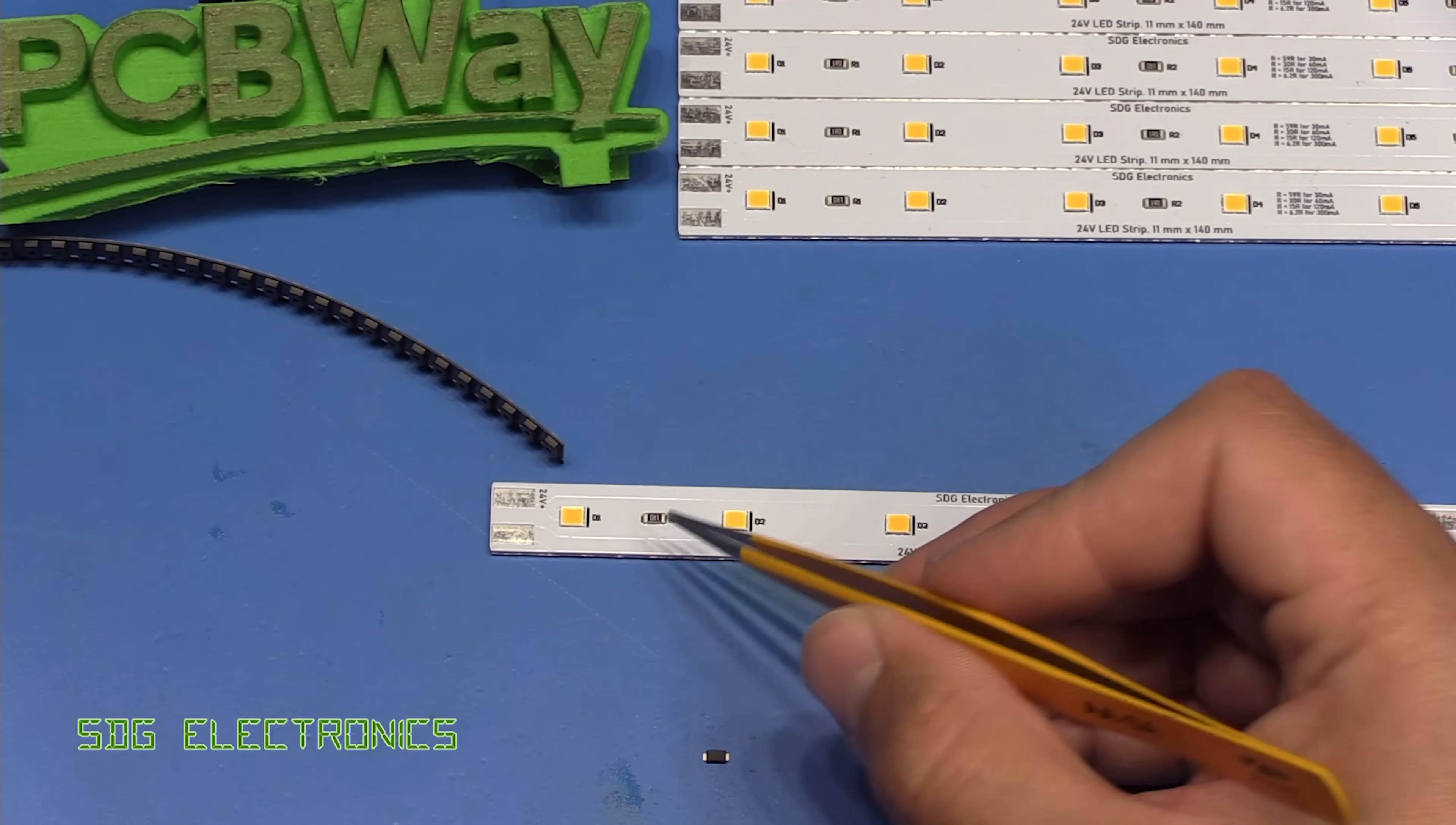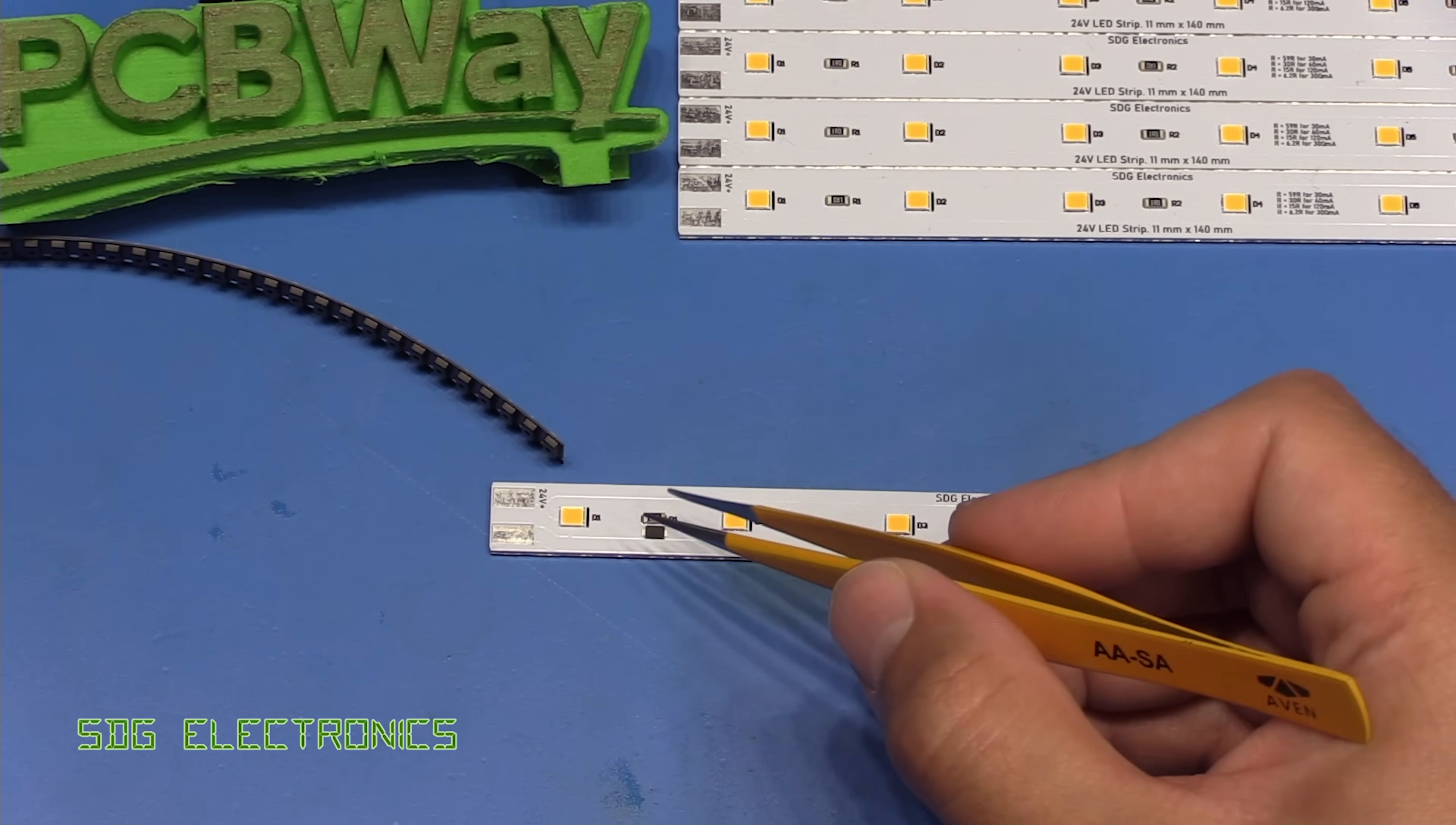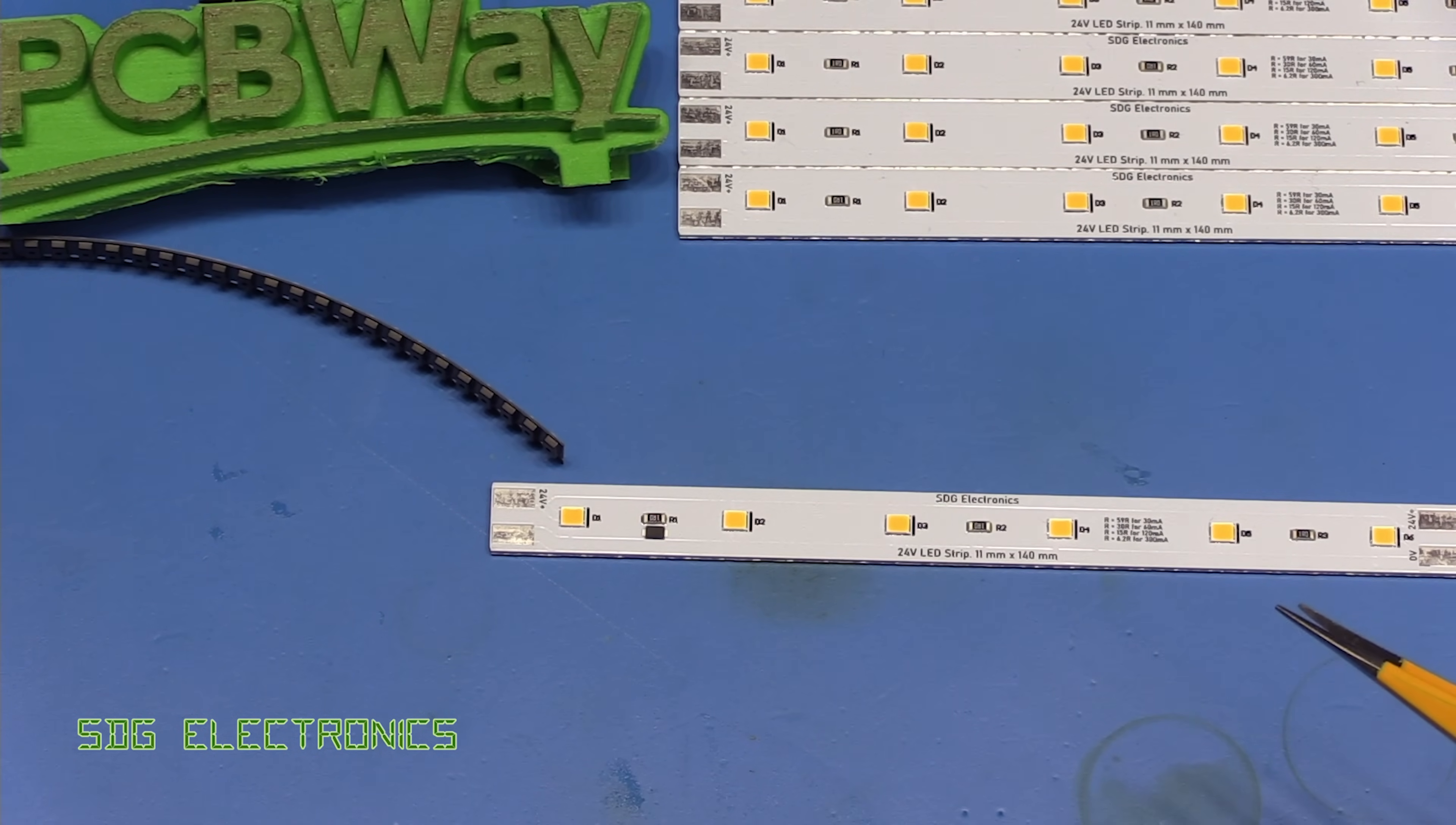Now fortunately I picked 1206 resistors and these are precisely the correct footprint for these constant current diodes so simply we can desolder these resistors we only need to desolder one of them put that one in its place and then we can start testing the PCB. But before we do that a quick word from our sponsor PCBWay.